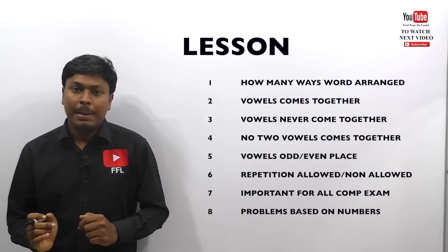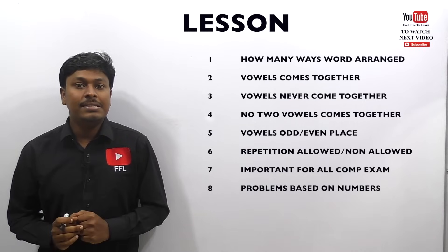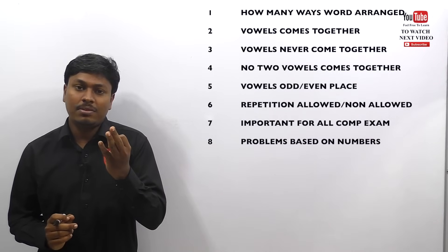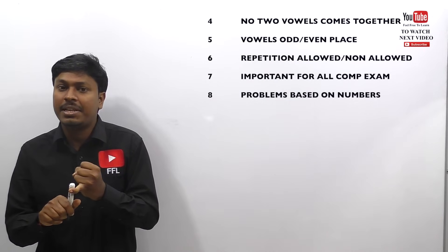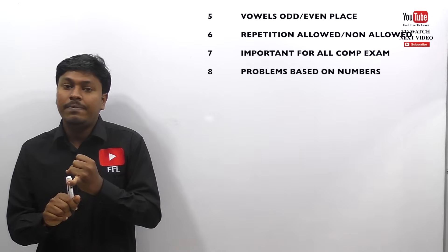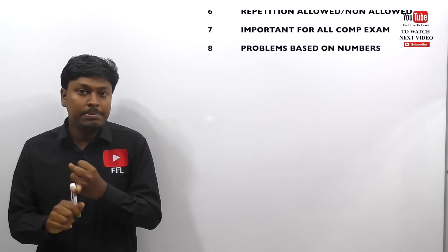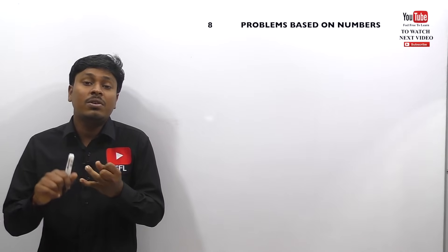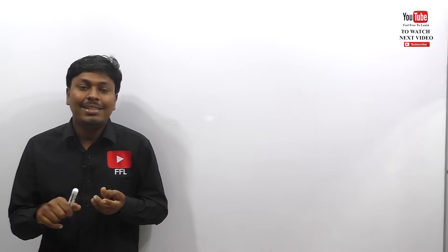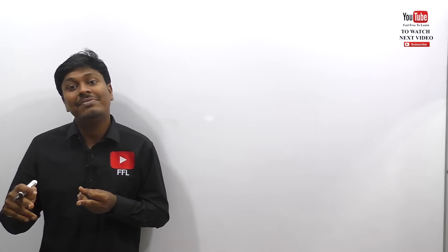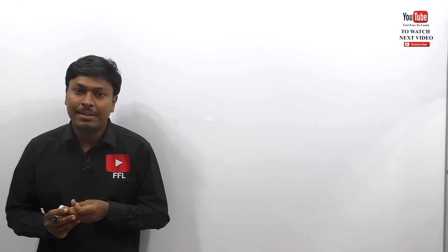My advice is to know three things: first, what is the definition of permutation; second, what are all the formulas used in this topic; and third, you should know what is 3 factorial, 4 factorial, 5 factorial, and so on.